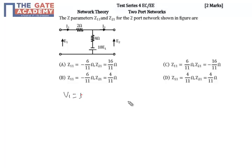V1 equal to i1 into z11 plus i2 into z12. V2 equal to i1 into z21 plus i2 into z22.